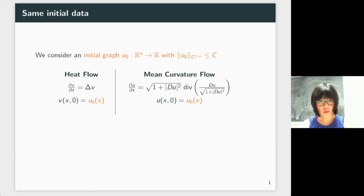The mean curvature flow solution is denoted by U, and ∂U/∂t equals the expression on the right. Again, the initial condition at time t = 0 is U₀. So we start the heat flow and the mean curvature flow with the same initial data and see how they evolve.